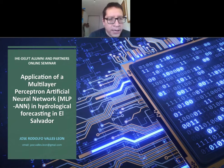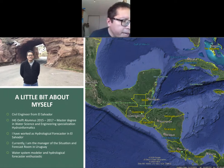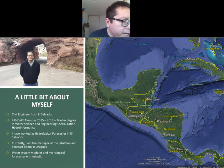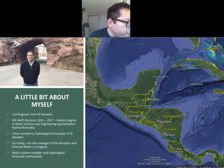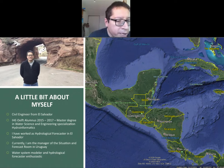First I want to start talking a little bit about myself. I am a civil engineer from El Salvador, located in the central part of America near Honduras, Guatemala, and Mexico. I am an IHE Delft alumnus where I learned so many things, and I have worked previously in hydrological forecasting in my own country. Now I'm working as a manager of the situation and forecast room, and I define myself as a water system modeler enthusiastic about hydrological forecasting.